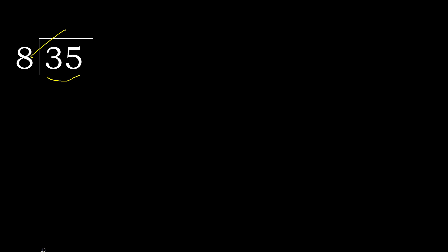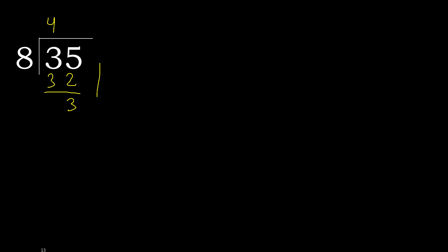8 multiplied by 5 is greater. Multiplied by 4: 32 is not greater. Ok, subtract — remainder is 3. Next.